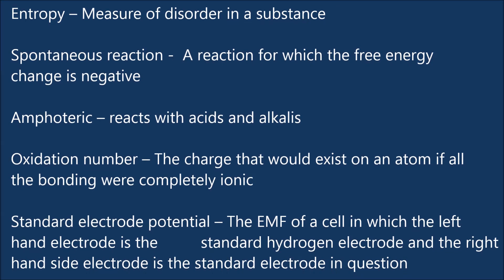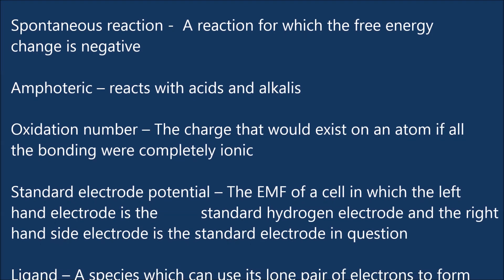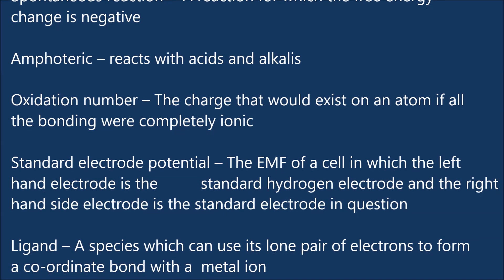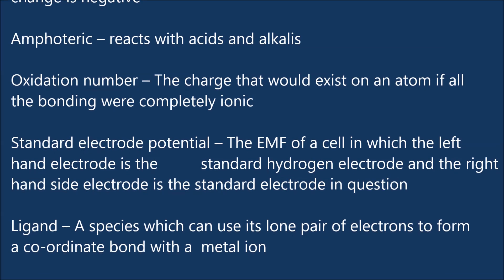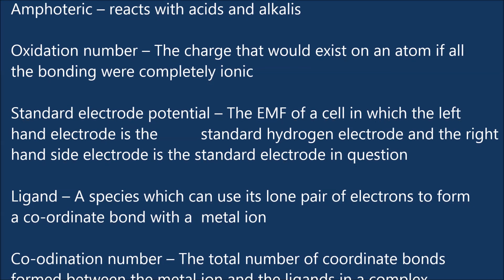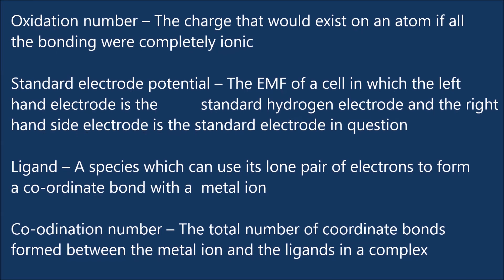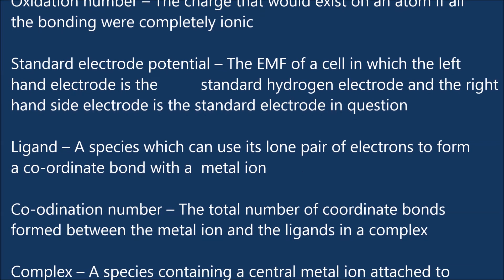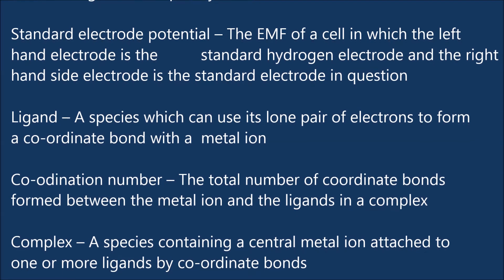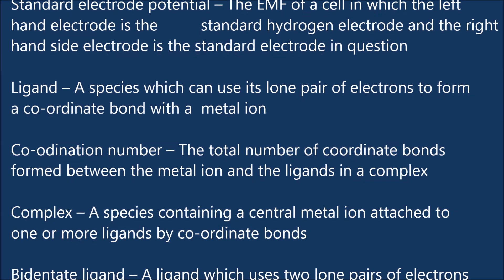Oxidation number: the charge that would exist on an atom if all the bonding were completely ionic. Standard electrode potential: the EMF of a cell in which the left hand electrode is the standard hydrogen electrode and the right hand side electrode is the standard electrode in question. Ligand: a species which can use its lone pair of electrons to form a coordinate bond with a metal ion.